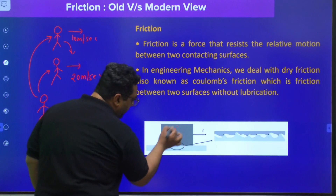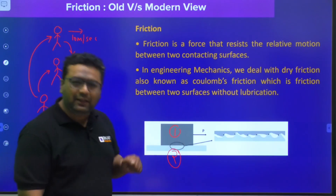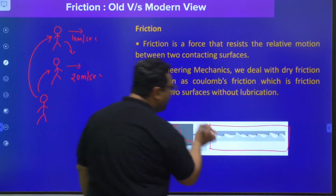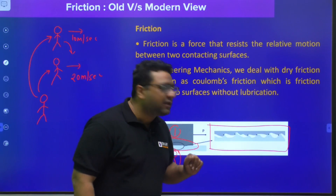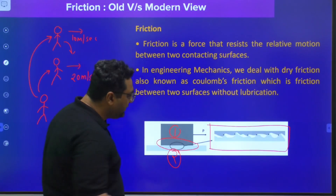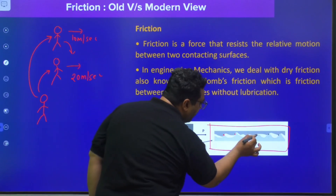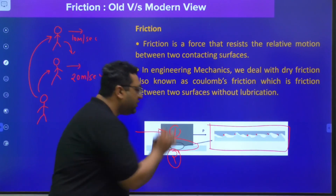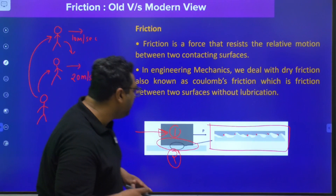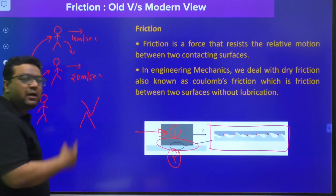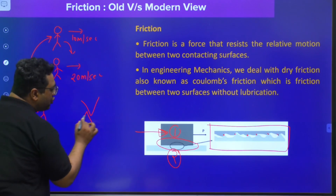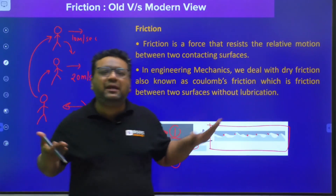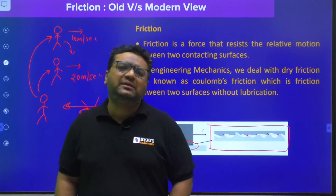The old view says: if a body rests on a surface, when you see this contact region under a microscope, you will find multiple point contacts due to the rough surfaces of both bodies. These are microscopic irregularities. When you try to move the first body, these irregularities come in the path of each other. So to make the motion of one body over another, these irregularities need to be broken. Since this happens at a micro level, we cannot see it.